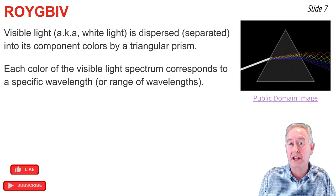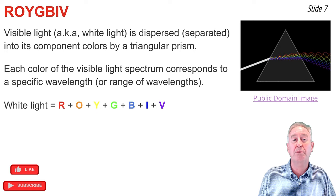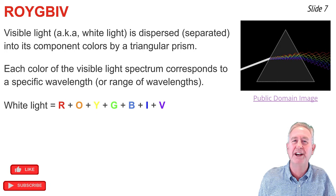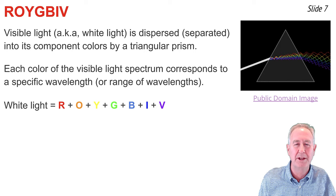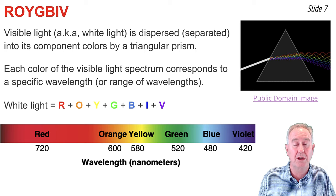We also understand from an animation such as this that white light is associated with the presence of all of the colors of the visible light spectrum. To give you a feel for the range of wavelengths in the visible light spectrum...